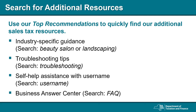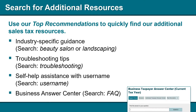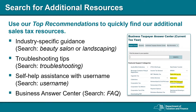We use the same terms you use in the search box so you can find what you're looking for by using those keywords. For example, if you're looking for sales tax guidance specifically for your salon, type 'salon.' For troubleshooting, type 'troubleshooting.' If you need self-help assistance with your username, type 'username' into the search field. If you need to find the business answer center, type 'FAQ.'